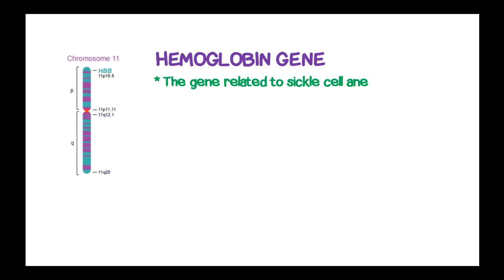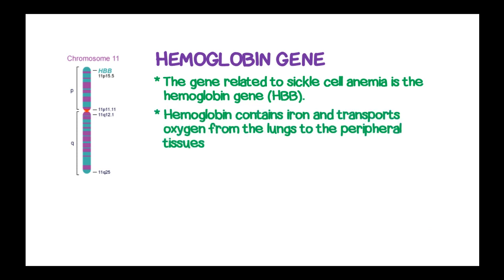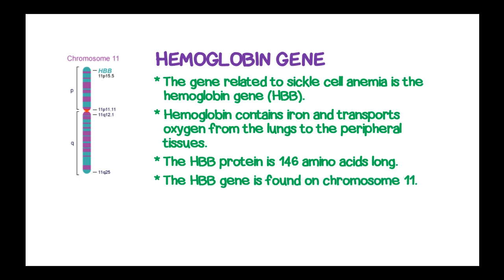The gene related to sickle cell anemia is the hemoglobin gene, or HBB. Hemoglobin contains iron and transports oxygen from the lungs to the peripheral tissues. The hemoglobin protein is 146 amino acids long and is found on chromosome 11.